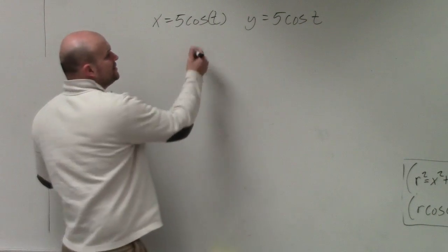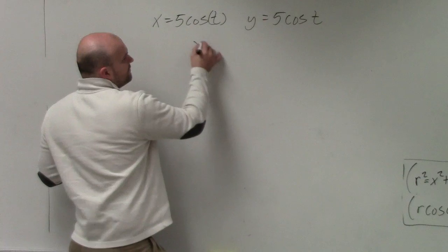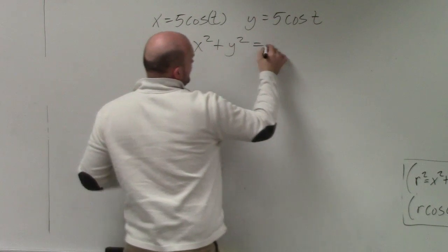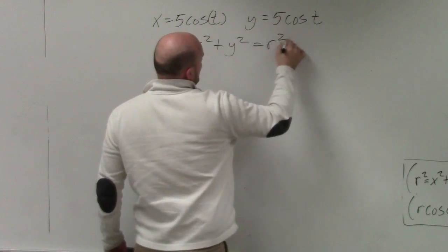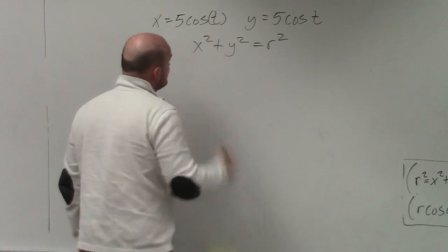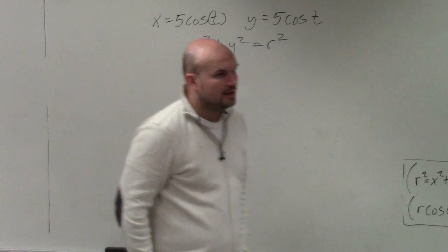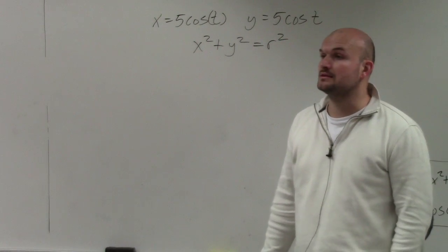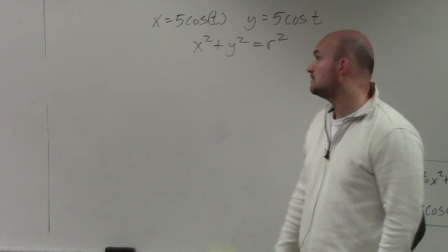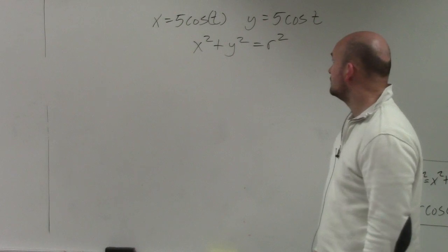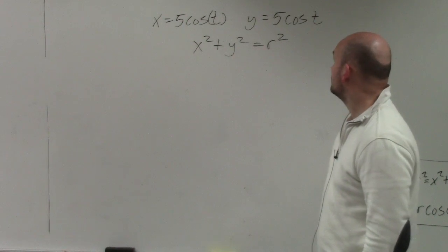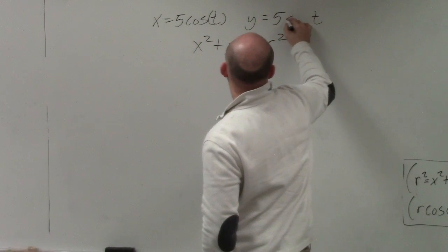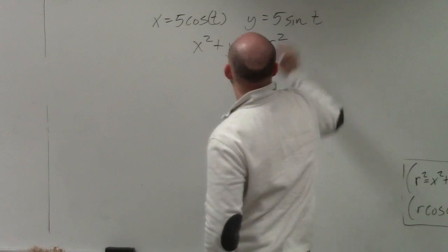What we're going to want to use is our format that x squared plus y squared equals r squared. That is the equation of a circle. And that's supposed to be y equals 5 sine t — thank you for the correction.